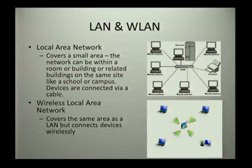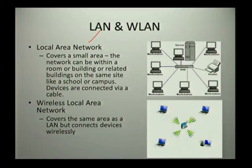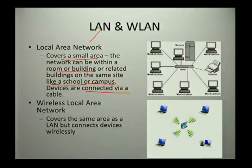This was covered in Grade 10, so this is just a quick revision. A local area network, which is your LAN, covers a small area within a room or a building or related buildings on the same campus and they are connected via a cable. Your wireless area network covers the same area as the LAN but connects devices wirelessly.